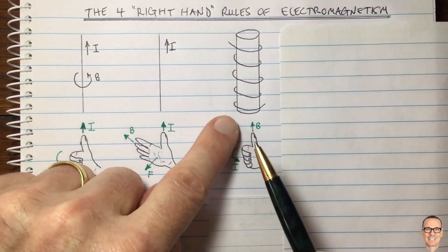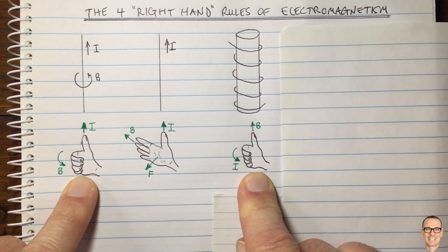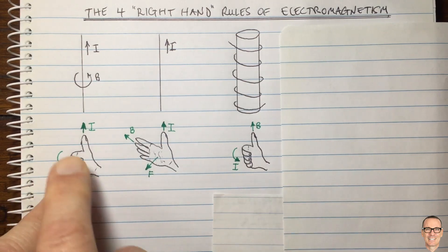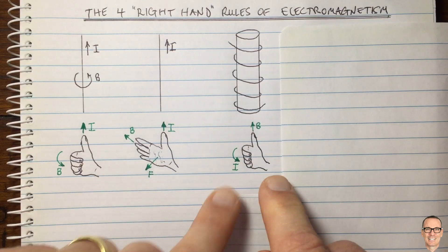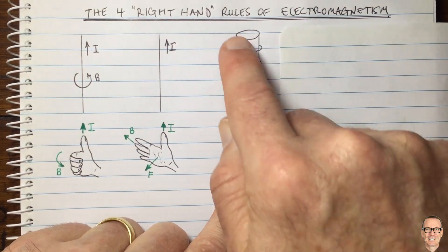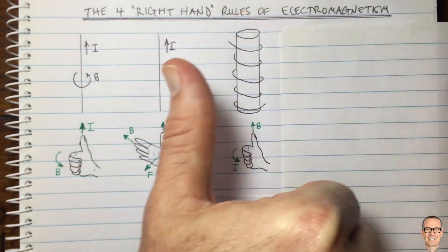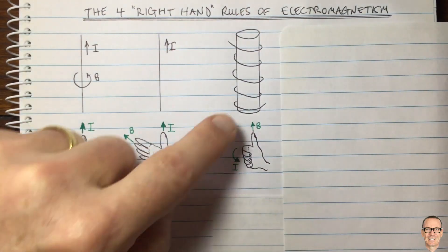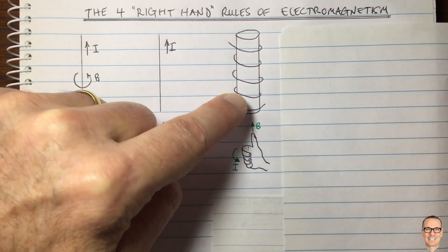The third right-hand rule relates to coils, and you can see it's a curl rule again, but the directions are flipped. Instead of having the current in the direction of the thumb, now we have the field in the direction of the thumb. If the current is going around the coil as shown, putting your fingers in the direction of the current — curling around — your thumb then shows the direction of the magnetic field in the middle of the coil.